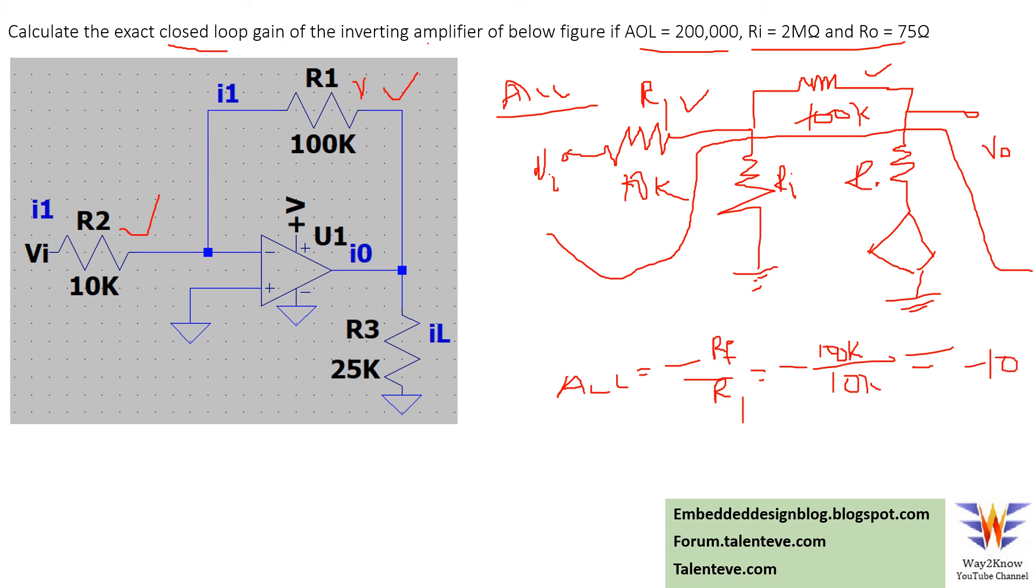These parameters which are given are just misleading. The closed loop gain does not depend on the open loop gain, input impedance, or output impedance of the op-amp. It mainly depends on the feedback resistor and the input resistor - the external components connected to the op-amp.